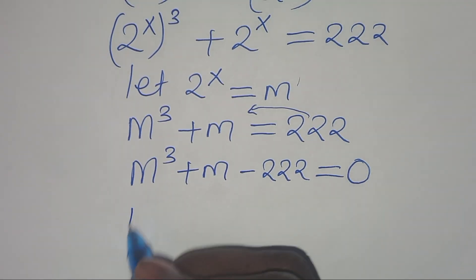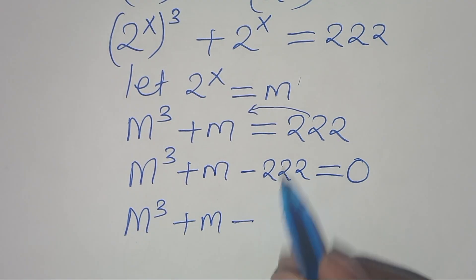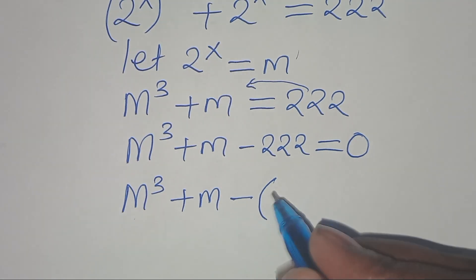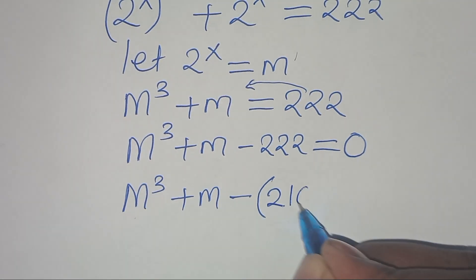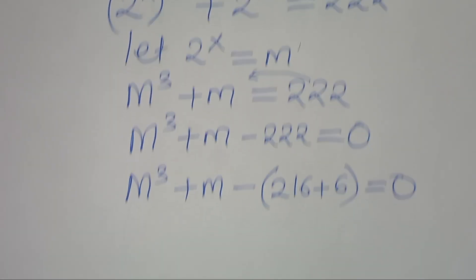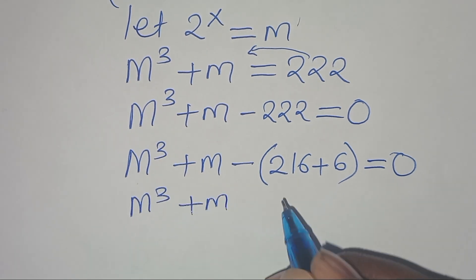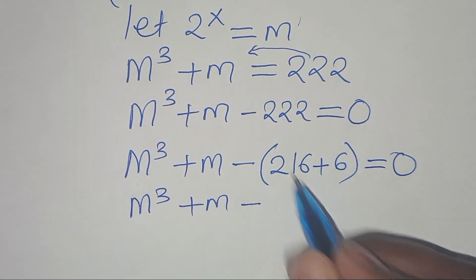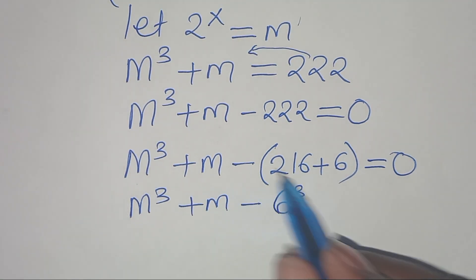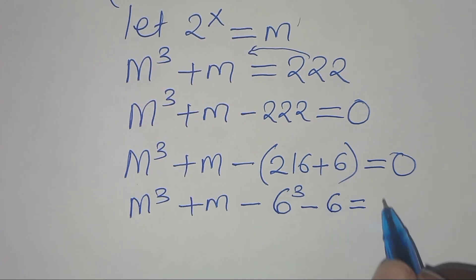The next step is that we have m to the power 3 plus m minus 216, and we can express 22 as 216 plus 6. So we have m to the power 3 plus m minus 216 minus 6, this is equal to 0. This gives us m to the power 3 minus 2 to the power 3, then minus 6, this is equal to 0.